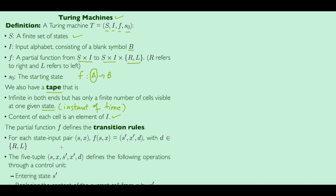For each state-input pair — for example, state S and input X — if we apply the mapping F on this pair, we get a next state S', a next symbol X', and a direction D, where D is either right or left. This five-tuple (S, X, S', X', D) defines the operations through a control unit.